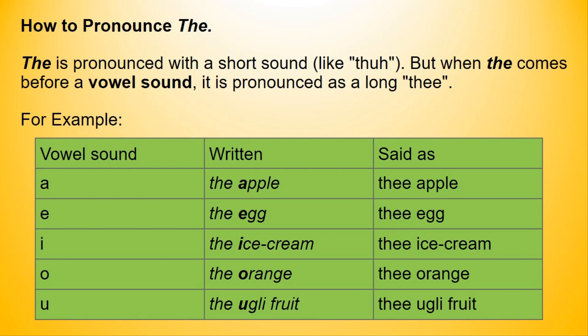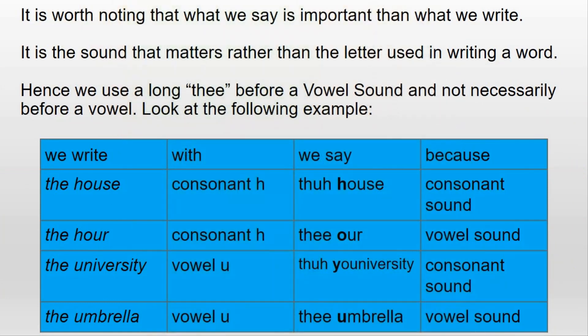Vowel sound O — written as follows and said as 'the orange'; vowel sound U — written as follows and said as 'the ugly fruit'. It is worth noting that what we say is more important than what we write. It is the sound that matters rather than the letter used in writing a word. Hence, we use a long 'thee' before a vowel sound, and not necessarily before a vowel.